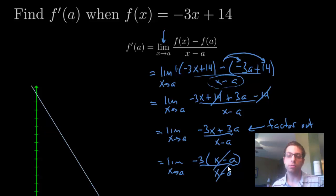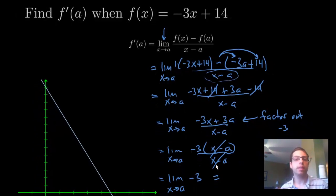Alright, those will cancel, and you're left with the limit, as x approaches a, of -3, and the limit of any constant is a constant. So, f'(a), from up here, we worked it all the way down to the limit of -3, which is -3. And we already knew that the slope was going to be -3, so this does check.